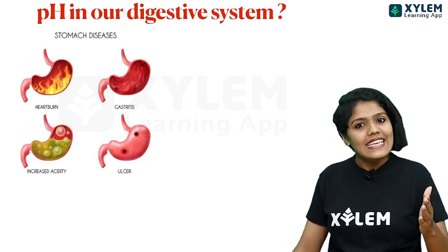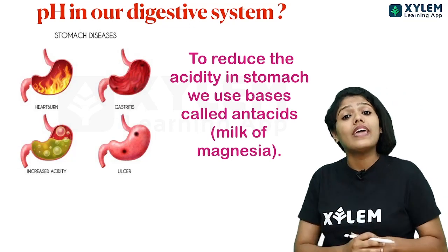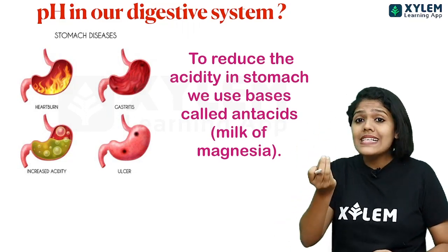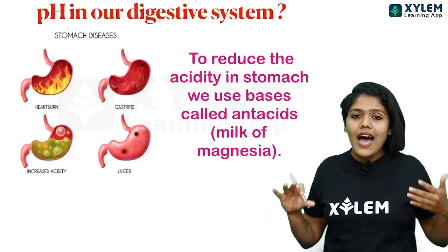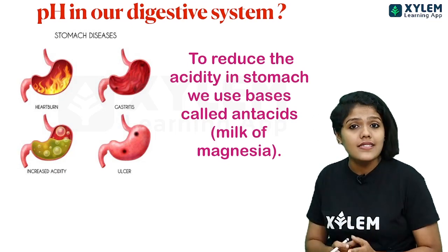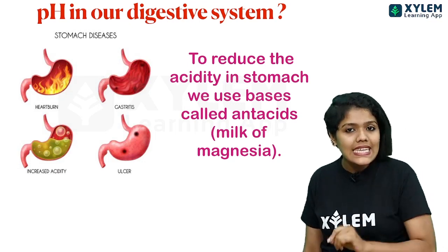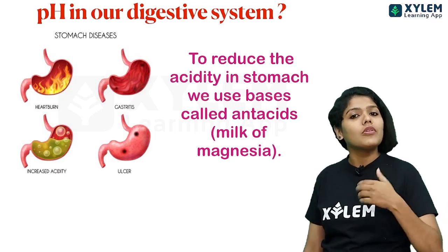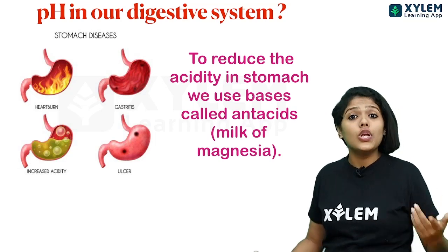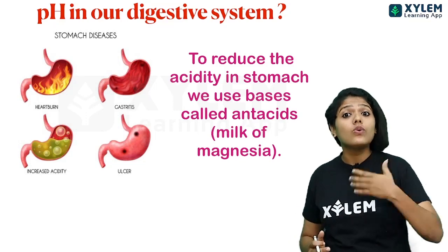To reduce such acidity in our stomach, we use substances called antacids, which neutralize the excess acid. For example, Milk of Magnesia, which is magnesium hydroxide (Mg(OH)₂), is basic in nature and is used as an antacid. When we take antacid tablets, they neutralize the excess HCl in the stomach and provide relief.